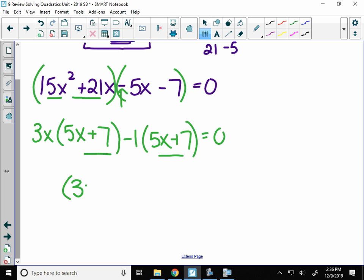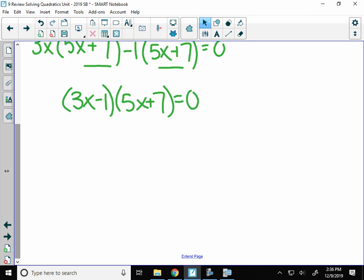Remember, you have to write your factored form. So 3x minus 1 times 5x plus 7, and I will set that equal to 0. Lastly, the zero product law says to take both of those factors, set them equal to 0, and you'll solve for x.